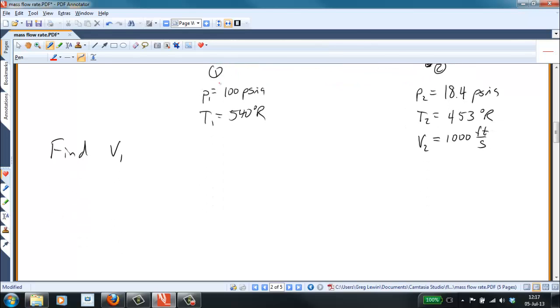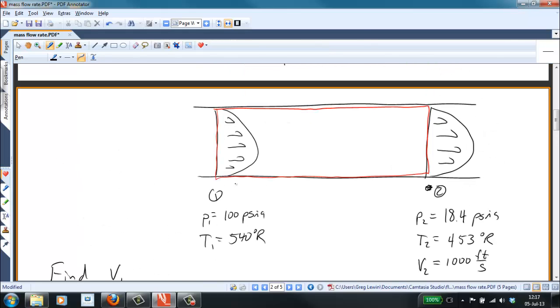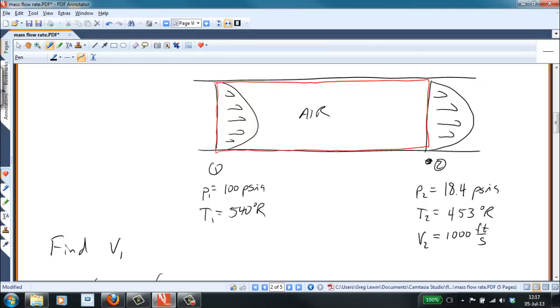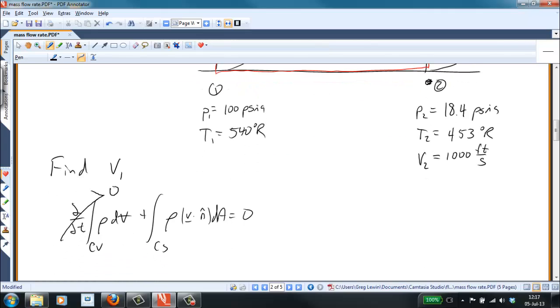Then we can write the conservation of mass, which we had above. The time rate of change over the control volume of the density within the control volume, plus integral over the control surfaces of rho times V dotted with n hat dA equals zero. I neglected to mention, but the flow, though compressible—obviously this is compressible because the pressure is much less downstream and we're dealing with air in this case—though the flow is compressible, it's still steady. And so the first term goes away to zero.